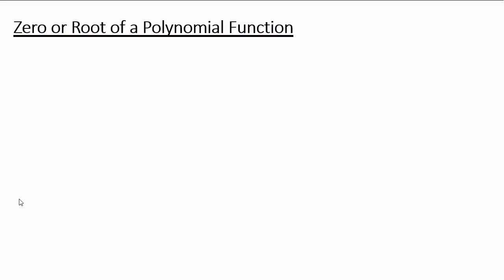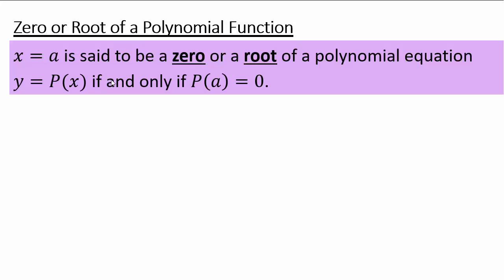In order to study polynomial functions, we need a few more terminologies before we can move on and look at polynomial functions as products of transformations of power functions. x equals a is said to be a zero or a root of a polynomial function if and only if substituting x equals a into the function gives you zero. In other words, x equals a is the x-intercept of the polynomial function.